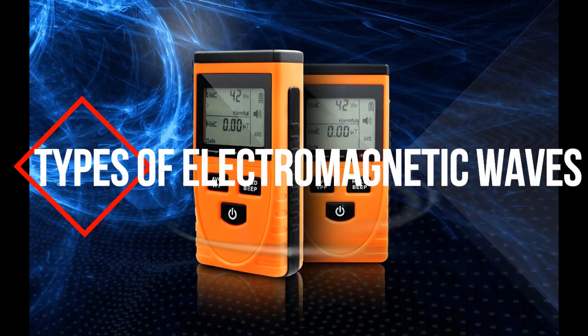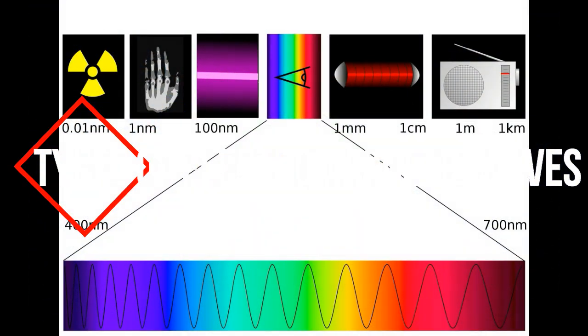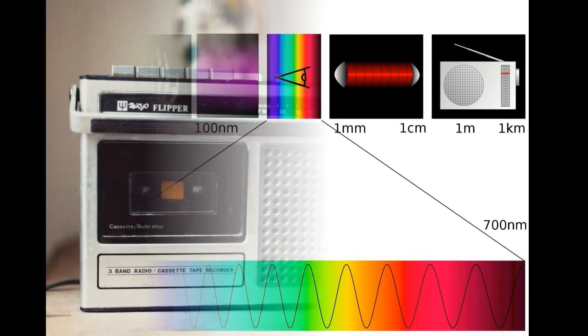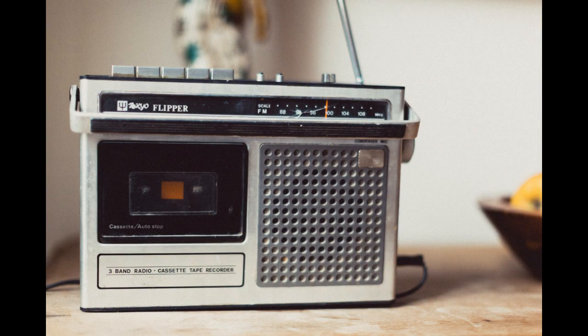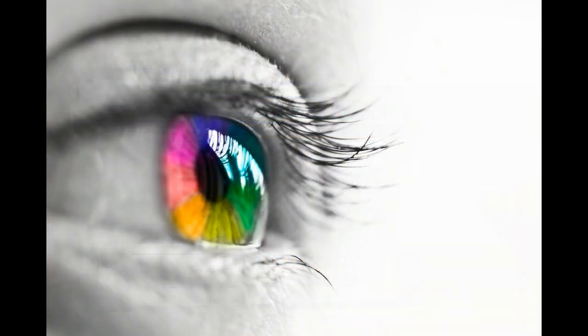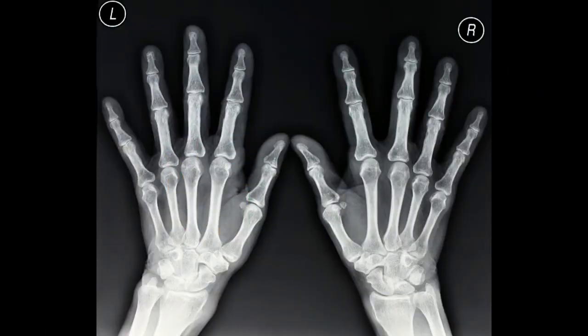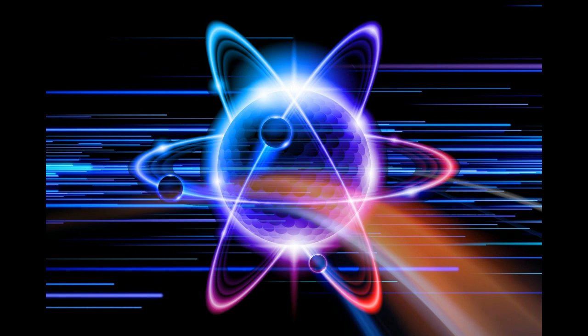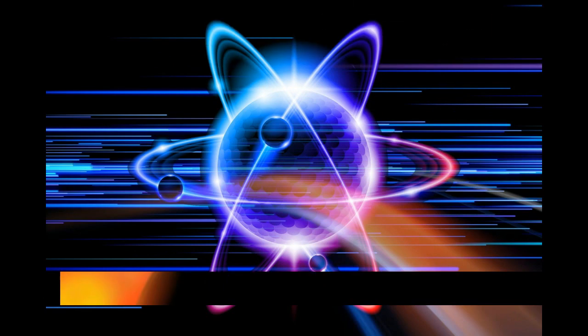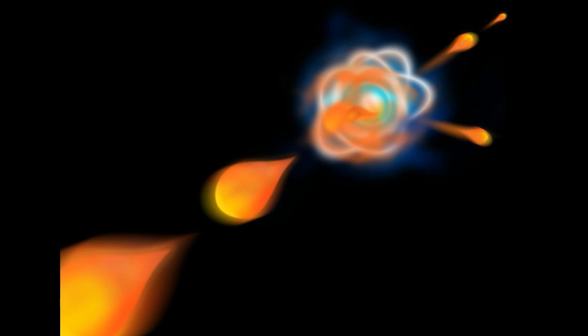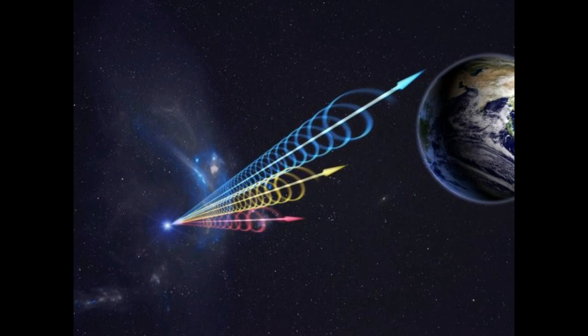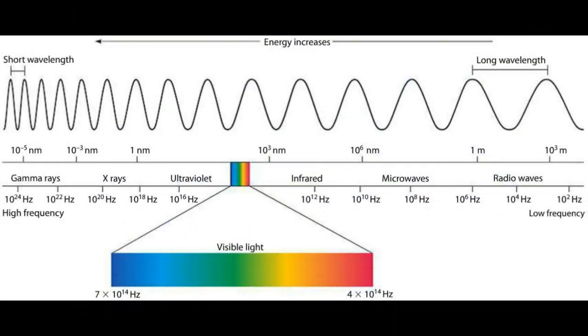The electromagnetic spectrum encompasses all wave frequencies, including radio, visible light, and x-rays. All EM waves are made up of photons that travel through space until they interact with matter. Some waves are absorbed and others are reflected. Scientists generally classify EM waves into seven basic types — all are manifestations of the same phenomenon.